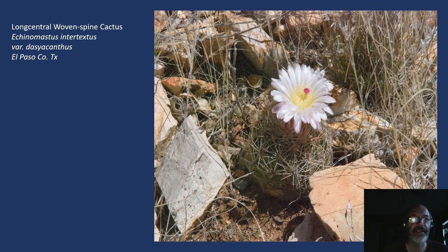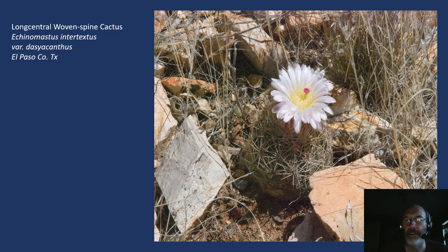Now we're moving into the Echinomastus. This is the long central woven spine cactus, Echinomastus intertextus. Here we refer to it as the early bloomer — these guys frequently start blooming in late February, early March. They're fairly common in the Franklin Mountains and many mountain ranges in this immediate area. Nice little plants that can get up to six or seven inches tall.